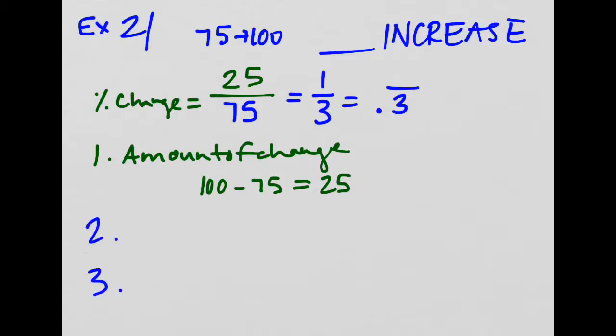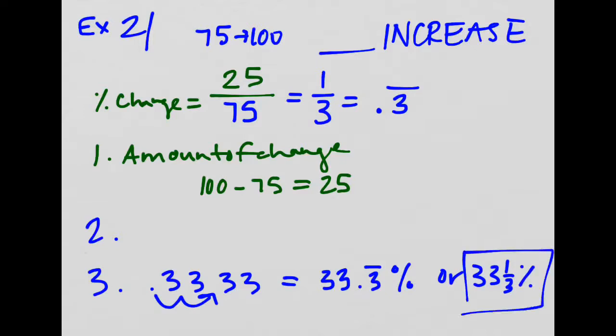So my amount of change is 25 and I will divide it by the original. I need to divide this by 75. That's where I started. Now when you divide this out, you'll find that this is the same as one third. So that's going to be 0.3 repeating. See why these decimal to fraction percent memorization is really helpful. And that was step two already. Now step three is to turn it into a percent. So I'll have 33.3 repeating percent or 33 and a third percent.